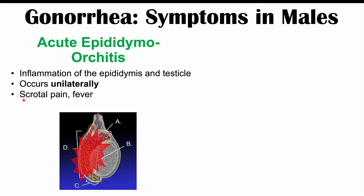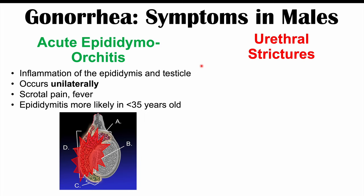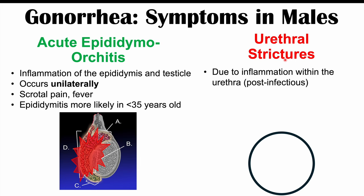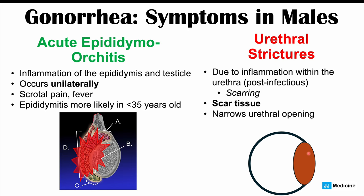Patients with acute epididymal orchitis experience scrotal pain and fever. Epididymitis is more likely to occur in male patients less than 35 years of age. Another important complication is urethral strictures, caused by scarring after inflammation within the urethra. Scar tissue can narrow the urethral opening, causing issues with urination — difficulty starting or maintaining a steady urinary stream.